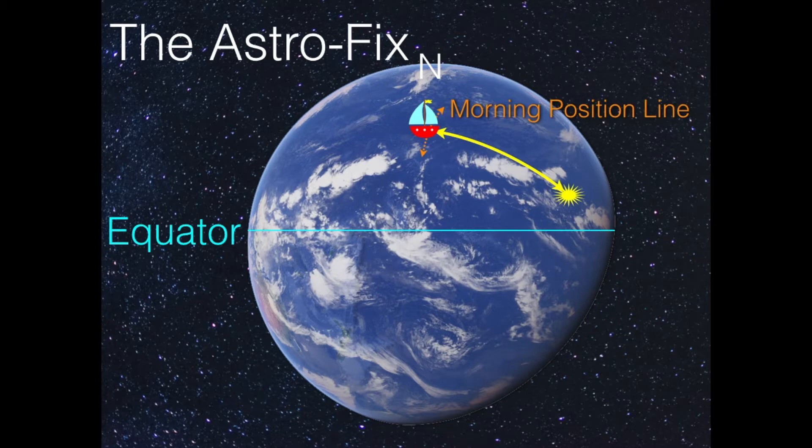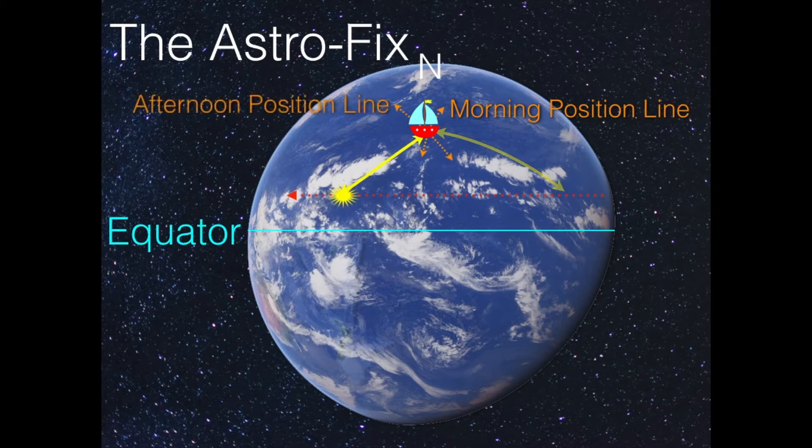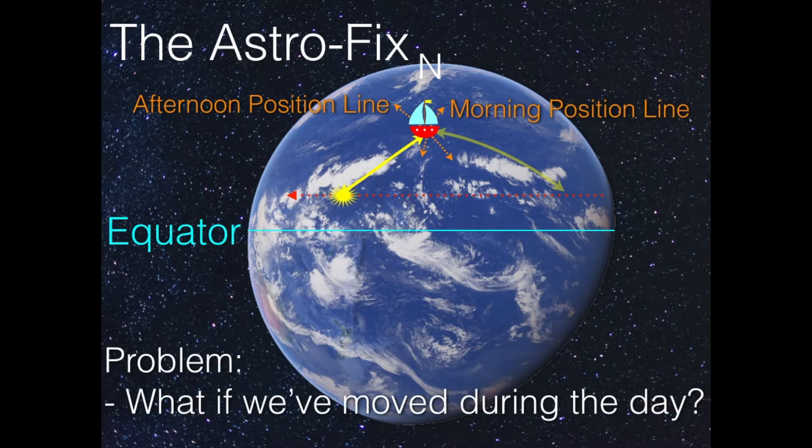And then we have also looked at the situation that the sun goes on into the afternoon. It moves westwards. In the afternoon, we get another position line. So where they cross, that's where we are. Now, the question is, what happens if we've moved in the meantime, when we have continued our sail while the sun has done the same?